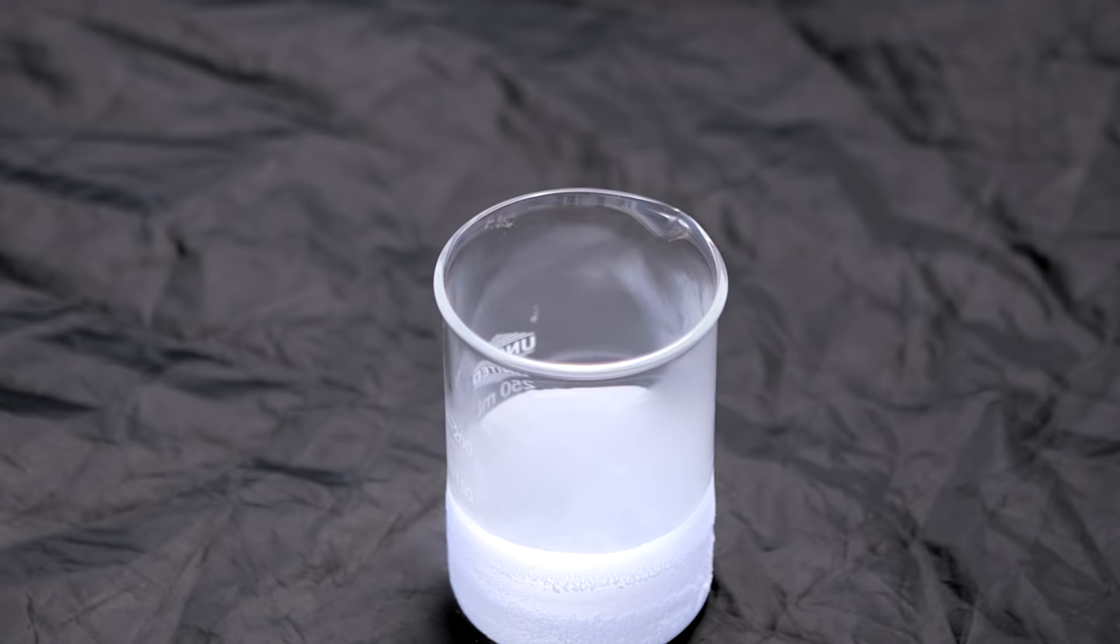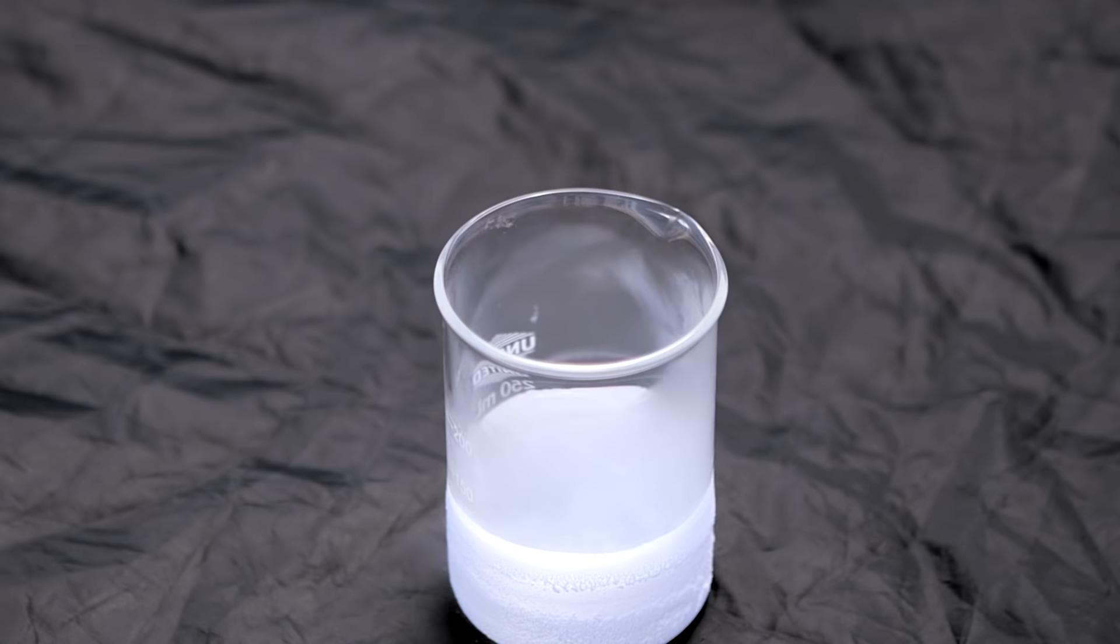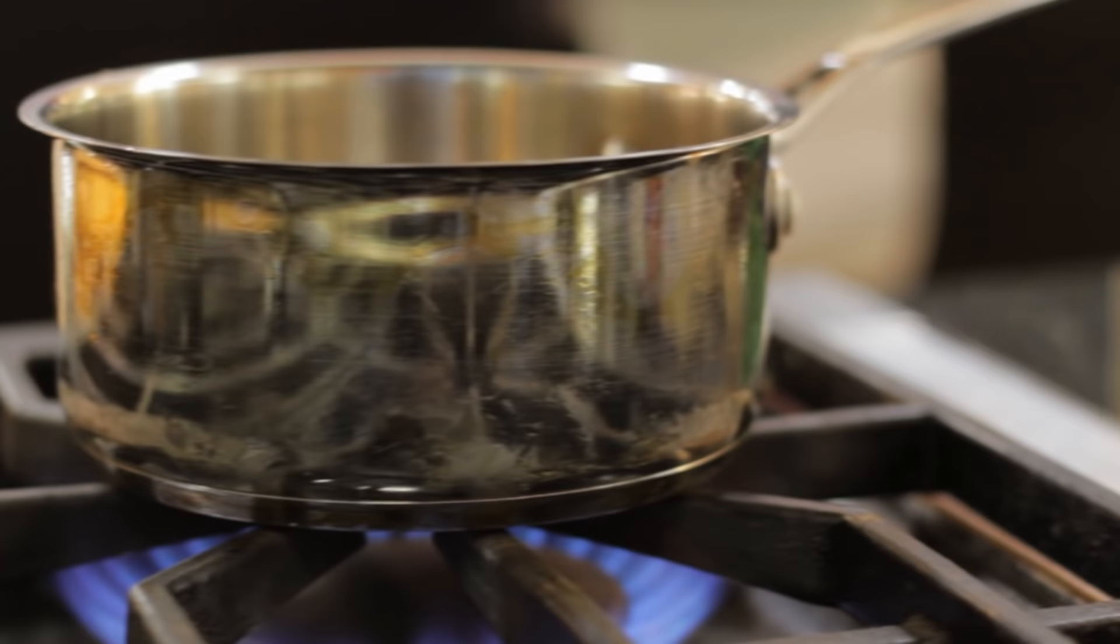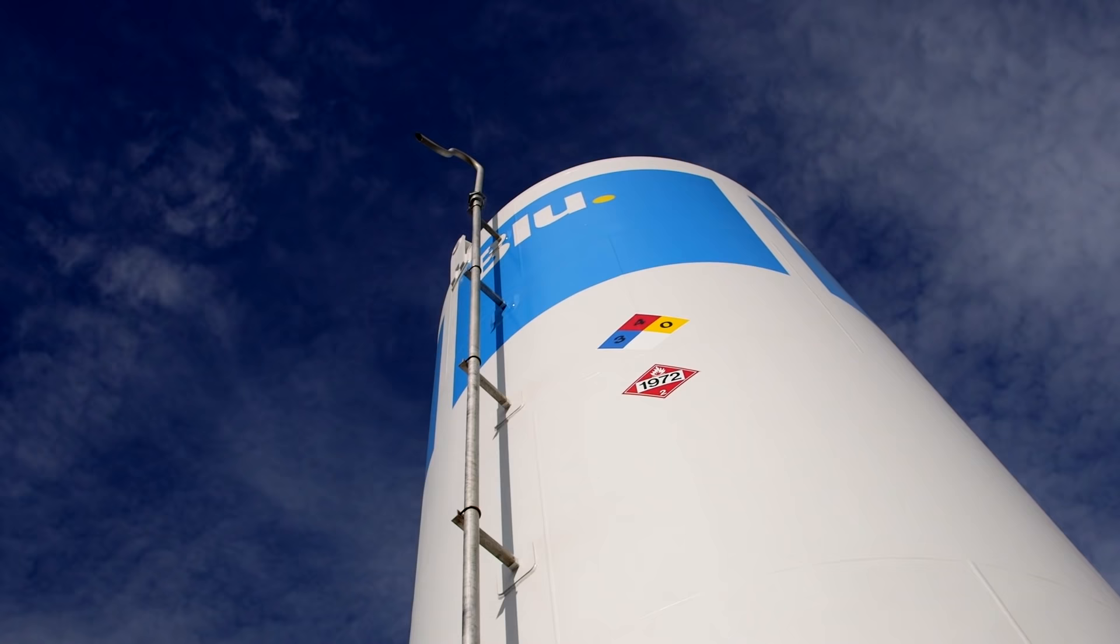As LNG mixes with more air, the mixture becomes too lean to burn. This is called a lower flammable limit. Now it's important to understand natural gas does burn, that's why it's an efficient and versatile fuel. However, for LNG to burn, it must be in a gaseous state in combination with air or oxygen.